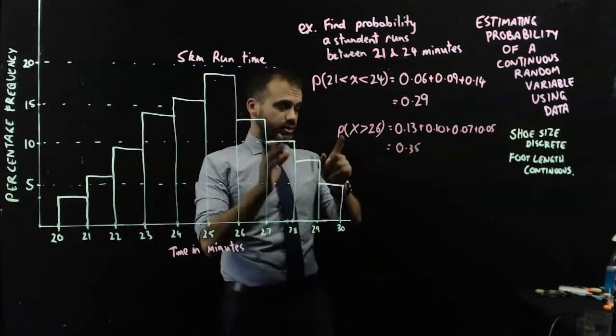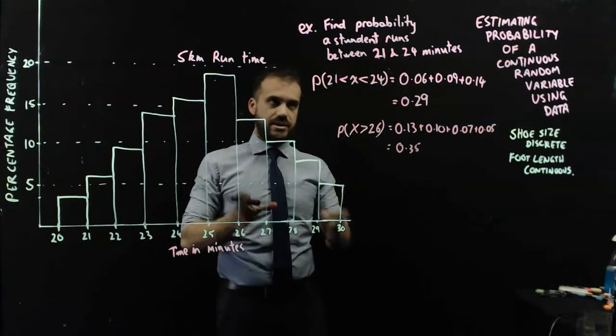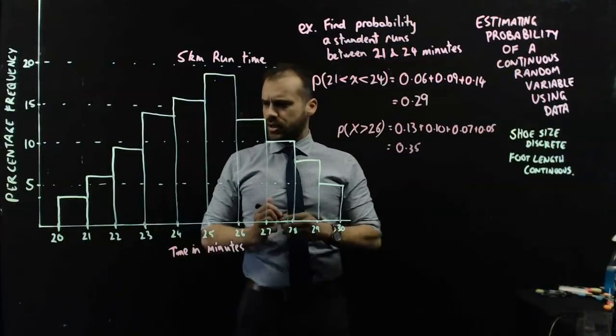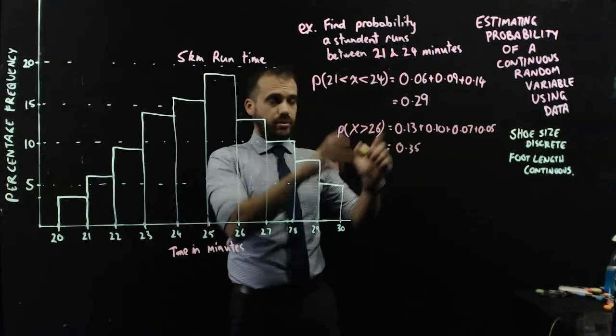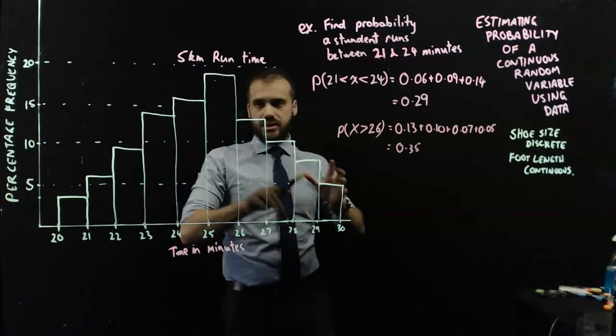There's a 35% chance that a randomly selected student runs faster than 26 minutes. So, these are estimates of probabilities of a continuous random variable using data.